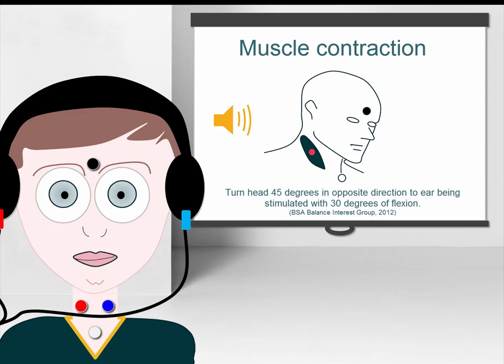The shoulders must be maintained in the same position as when sitting in a normal upright position. This is very important, as a body twist may lead to poor sternocleidomastoid muscle contraction and therefore result in poor CVEMP recordings.